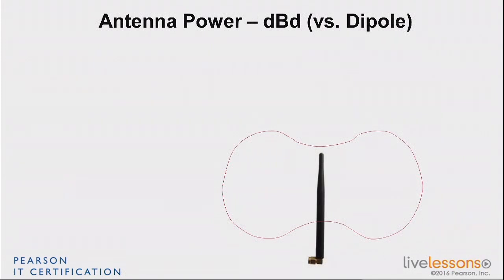Some people don't like to use the isotropic antenna. You'll still find people saying it's not fair — you're using an isotropic antenna, there is no such thing. So why use as a reference something that doesn't exist? If I talk about 1 milliwatt, there is a 1 milliwatt current. So let's use something that exists. They use as a reference the simplest, most basic antenna you can make, which is called a dipole antenna.